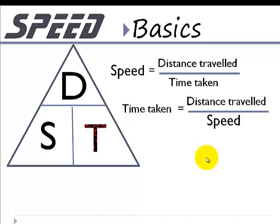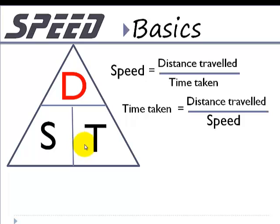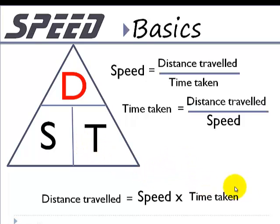Now, distance d is given by — you can see s and t are at the same level in the triangle — distance d is given by speed times time taken. So distance is given by speed times time taken.